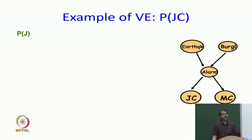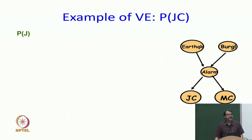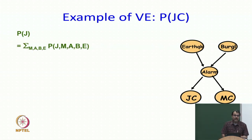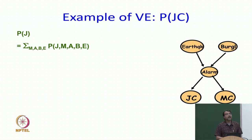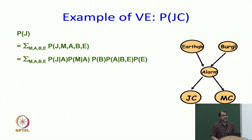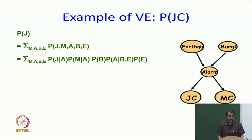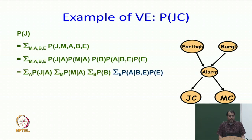Now let us do this for our particular example: P(B) × P(E) × P(A | E, B) × P(j | A) × P(m | A), summed over E and A. We will compute everything in the red in one step. This was the original conditional probability table for J given A and M given A. I need to compute P(j | A) × P(m | A) — first question: what is it a function over? Since small j and small m are given to me as constants, it is a function over A only.